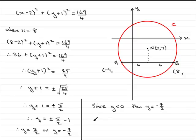And what that means then is that therefore the coordinates of A are going to be minus 4 and minus 7 over 2, and the coordinates of B are going to be 8 and minus 7 over 2. So there you have the coordinates now of A and B.